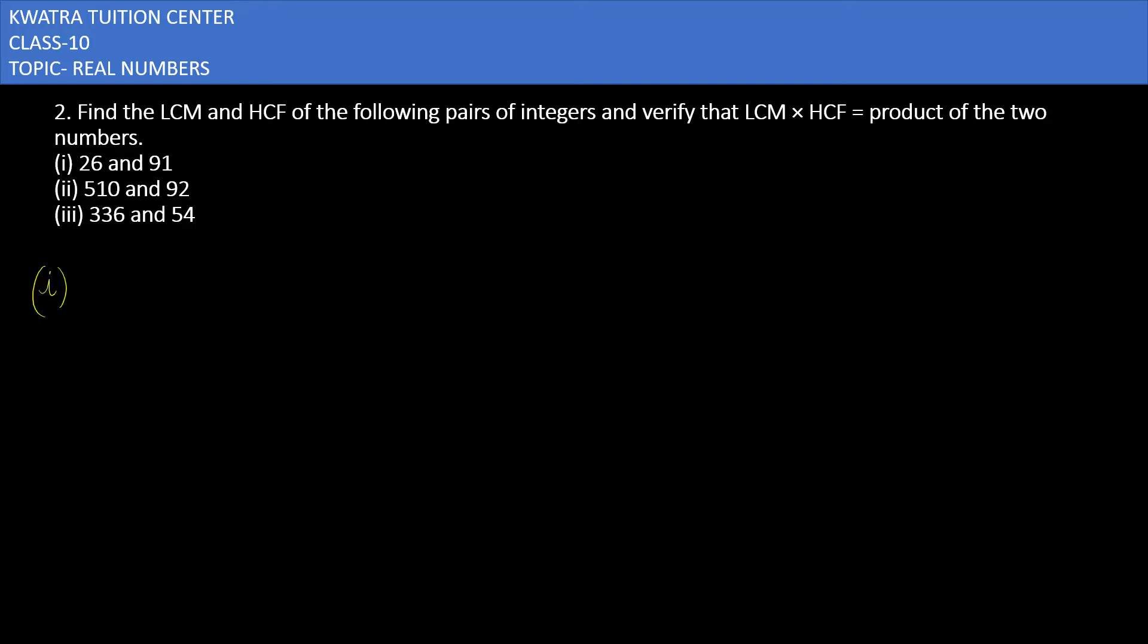And after that we have to verify the formula: LCM × HCF = product of two numbers. If you take the product of the given numbers, it will equal LCM × HCF.